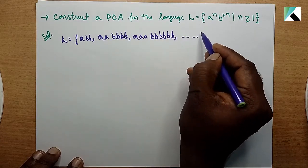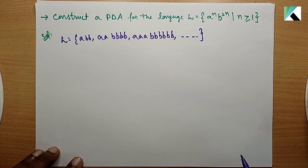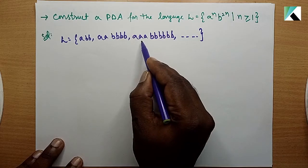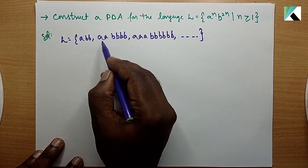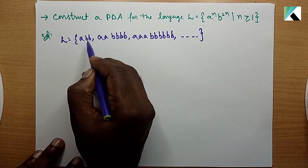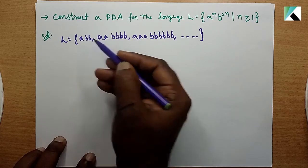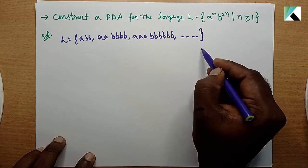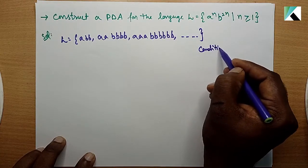For a power n you'll have 2n b's. For example, three a's means six b's, one a means two b's, two a's means four b's. So you've got constraints - conditions that the language must satisfy.